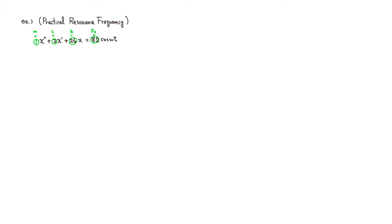Now that we have all those values, we use C(ω) from the previous video. We want to maximize the amplitude function C(ω), which equals F₀ over the square root of the quantity (k minus m·ω²) squared plus (c·ω) squared. Let's plug in all the given values.